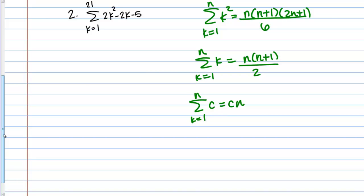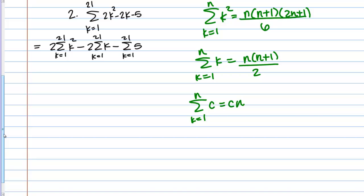Let's see if we can apply these formulas. What you can do is split this up in the same way you would split up a derivative or an integral. For example, you can pull constant multiples out front and split up differences. If I do that, I pull my constant multiple of 2 out front, then I have the sum of K squared, minus another constant multiple of 2, then the sum of K, minus the sum of 5. Now I can use the appropriate formula on each piece.